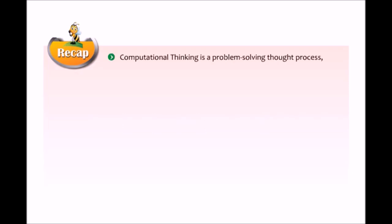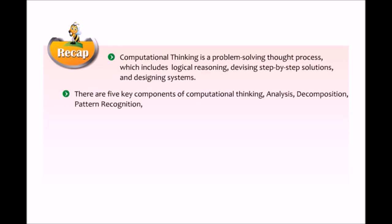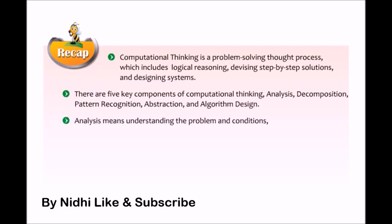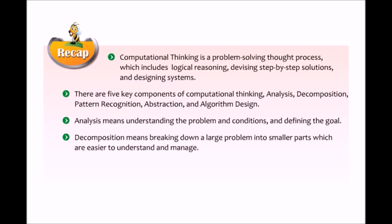Let us take a recap of this lesson. Computational thinking is a problem-solving thought process which includes logical reasoning, devising step-by-step solutions, and designing systems. There are five key components of computational thinking: analysis, decomposition, pattern recognition, abstraction, and algorithm design. Analysis means understanding the problem and conditions and defining the goal. Decomposition means breaking down a large problem into smaller parts which are easier to understand and manage.